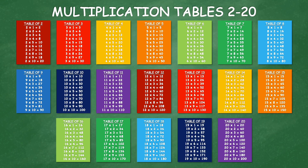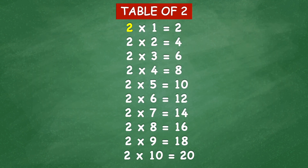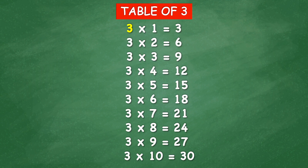Multiplication tables 2 to 20. Table of 2: 2 times 1 equal 2, 2 times 2 equal 4, 2 times 3 equal 6, 2 times 4 equal 8, 2 times 5 equal 10, 2 times 6 equal 12, 2 times 7 equal 14, 2 times 8 equal 16, 2 times 9 equal 18, 2 times 10 equal 20.